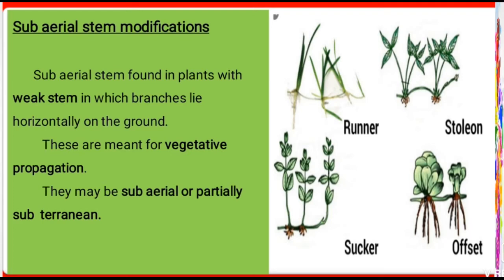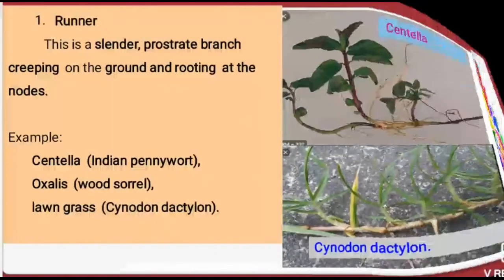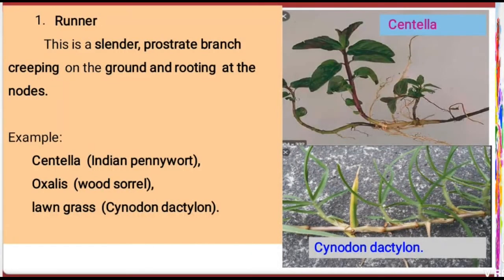These sub-aerial stems are used for vegetative propagation. They may be partially subterranean. There are four categories: first, runner; second, stolon; third, sucker; and fourth, offset.